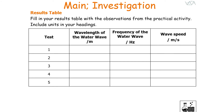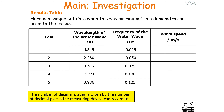Record your results in the results table, writing down both the wavelength and the frequency. To calculate the wave speed in meters per second, multiply your wavelength in meters by the frequency in hertz. The number of decimal places should match what the measuring device can record: for example, the wavelength measured with a ruler to three decimal places in meters, and frequency measured with a stopwatch to three decimal places.